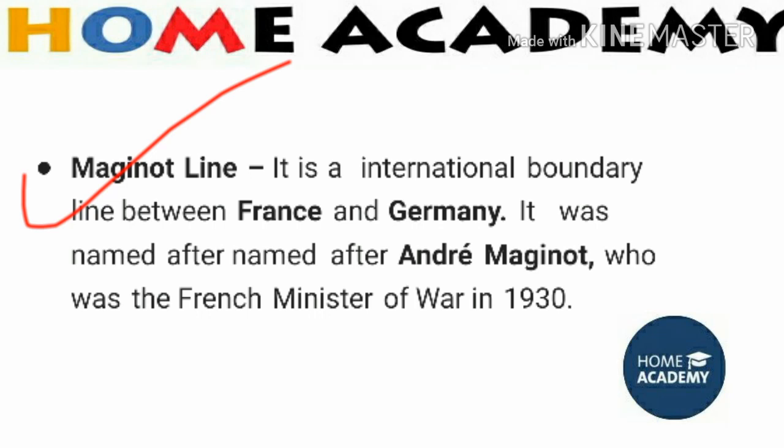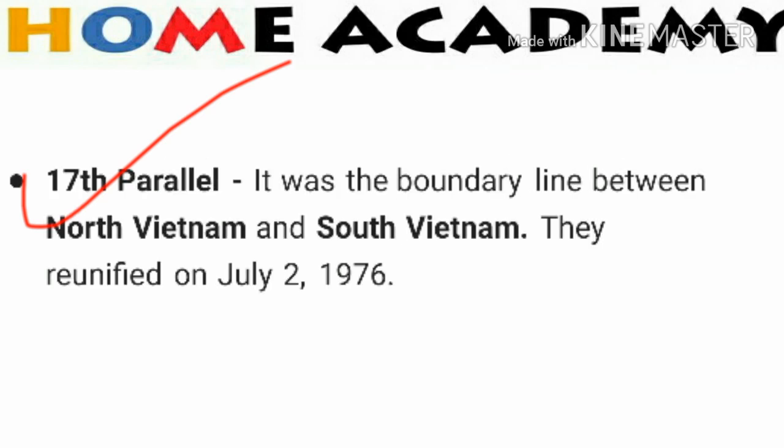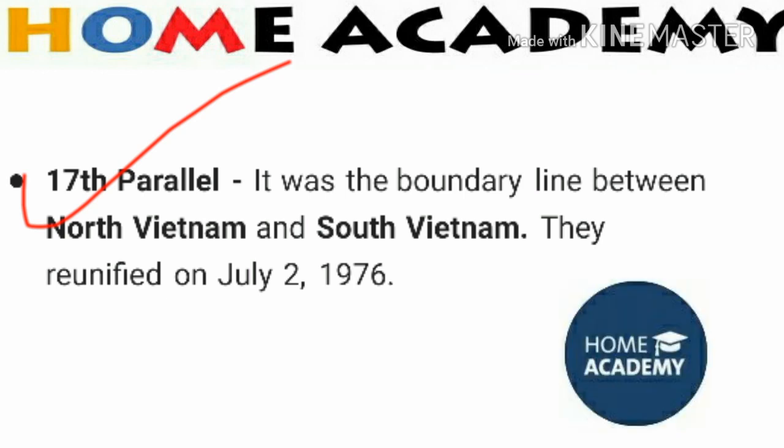The next important line is the 17th Parallel. It was the boundary line between North Vietnam and South Vietnam. The two Vietnams were later re-unified on July 2nd, 1976, after which the 17th Parallel ceased to serve as a boundary.